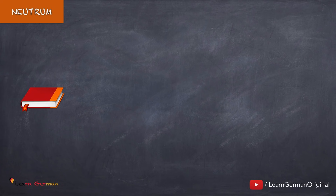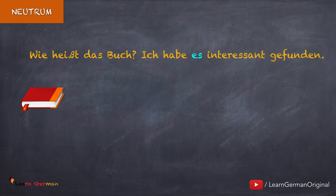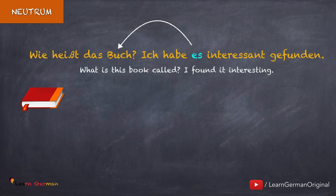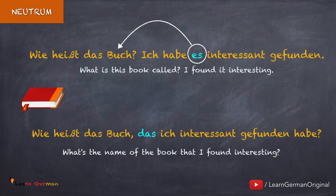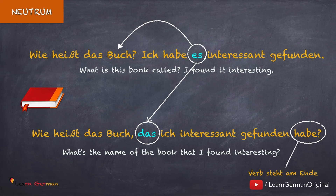Und hier ist ein Beispiel mit Pronomen: Wie heißt das Buch — ich habe es interessant gefunden. Der Relativsatz lautet: Wie heißt das Buch, das ich interessant gefunden habe? Hier benutzt man statt es nur das als Relativpronomen. Das Verb steht wie immer am Ende.